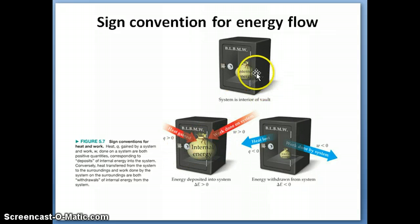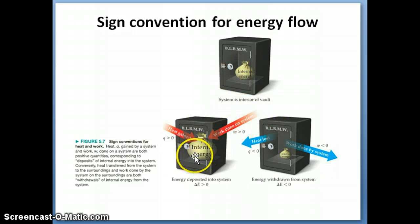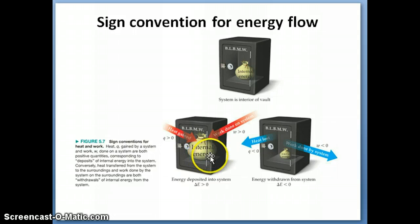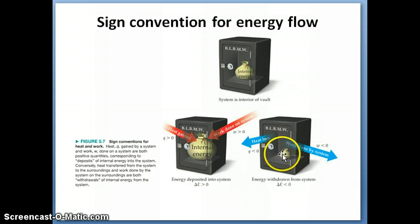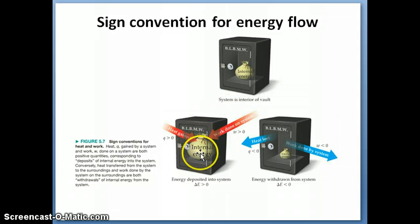We have a convention or a rule for denoting signs — for writing the signs for energy flow. The analogy here is like a bag of money inside a safe deposit — that's your system. If energy goes into the system, like putting money into the bag, the bag gets bigger. We consider that to be a positive for the bag because you're getting more. Vice versa, if you take money out from the bag, we consider that to be a negative. So the money represents energy: if we put in energy, the system gains energy, meaning the change in energy from the final compared to the initial is a positive number.